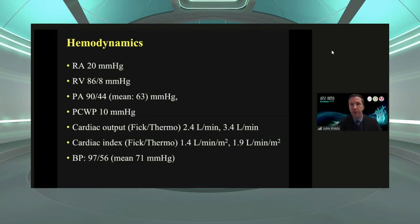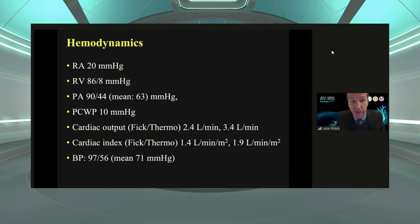This was his hemodynamics: right atrial pressure of 20, PA pressures of 90 over 44 with a mean of 63, pulmonary capillary wedge pressure of 10, cardiac output of 2.4 by Fick and 3.4 by thermodilution, cardiac index of 1.4 by Fick and 1.9 by thermodilution. His systemic pressure was 97 over 56. His PA pressures are getting close to his systemic pressures — that's why these patients are so vulnerable to systemic hypotension.